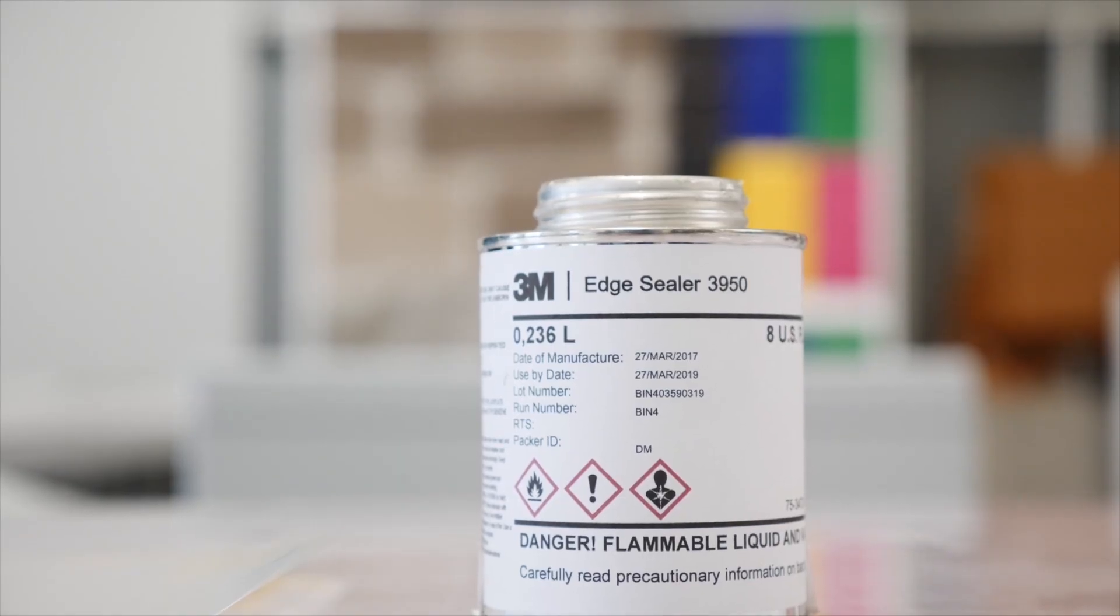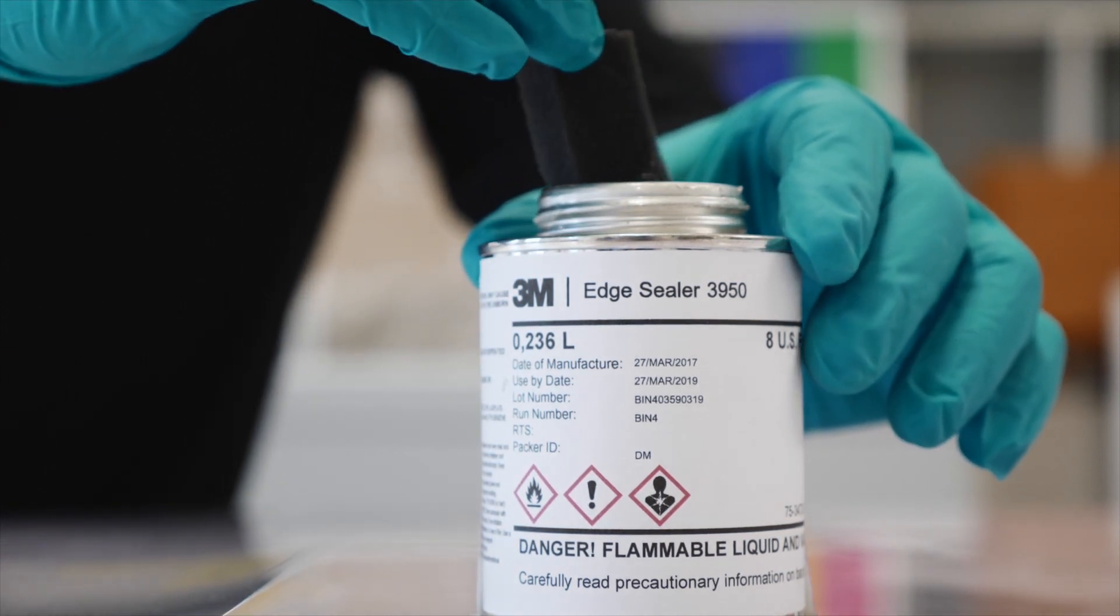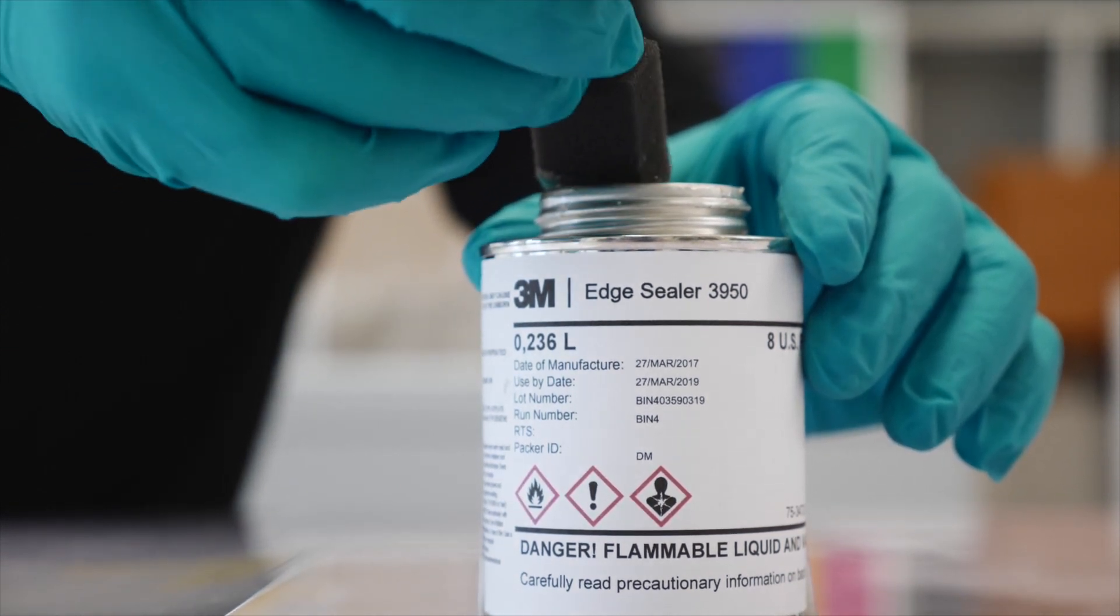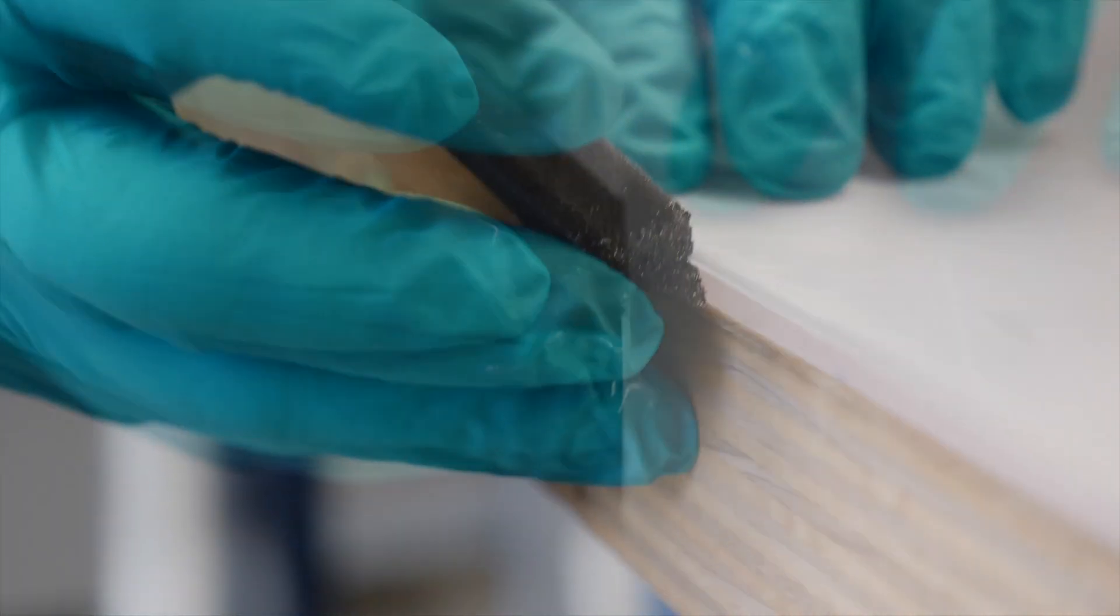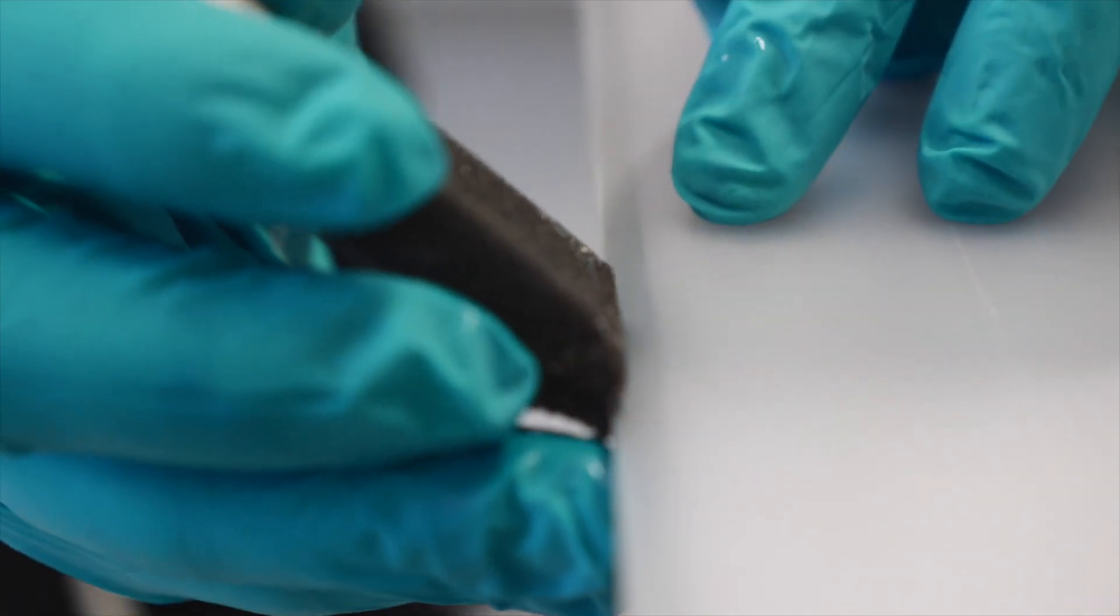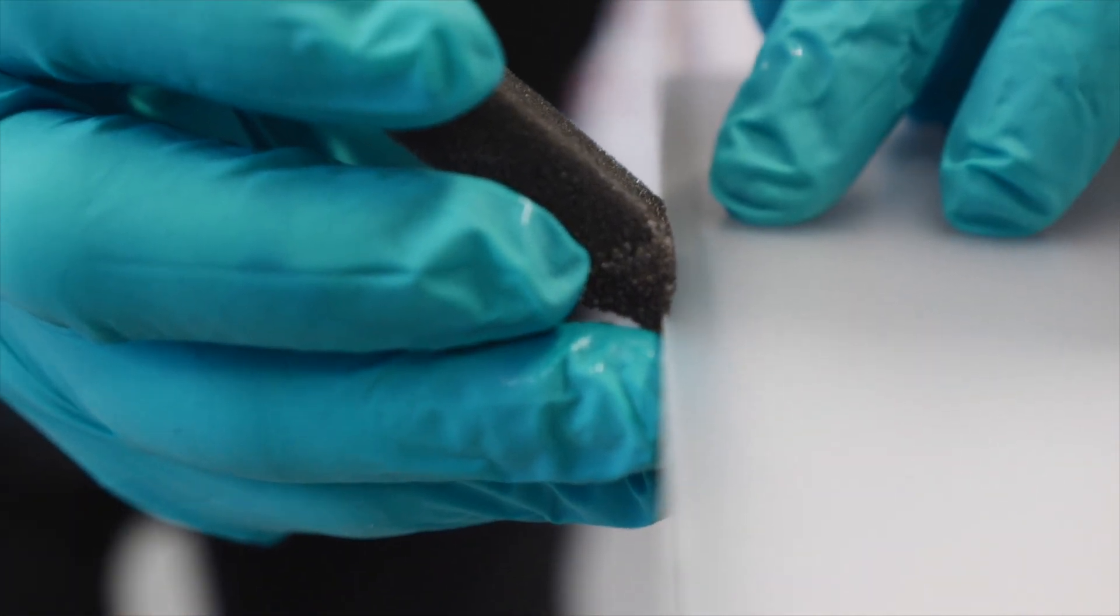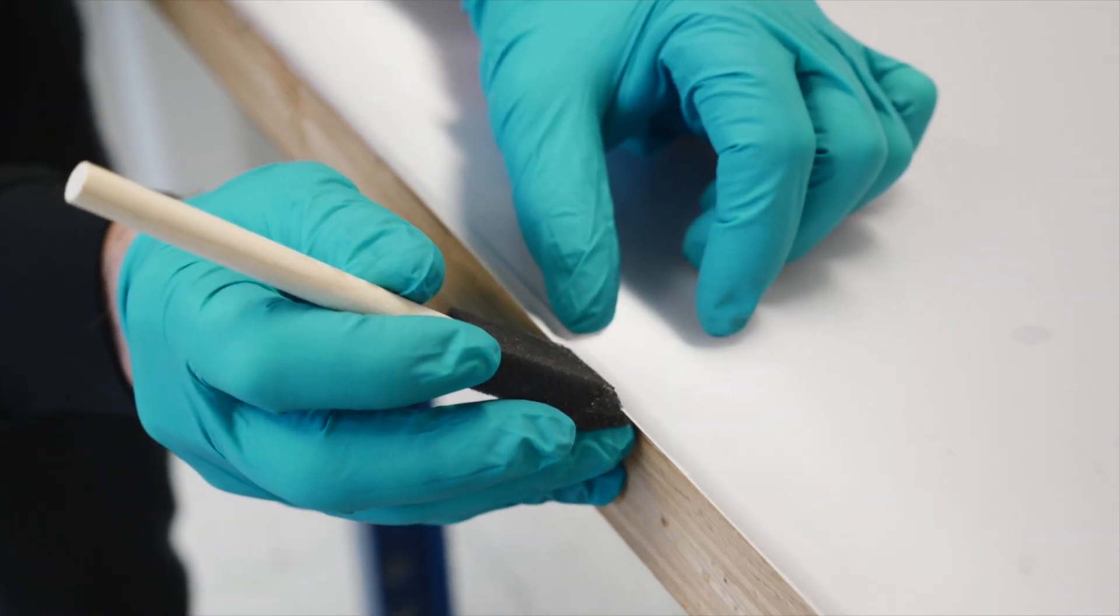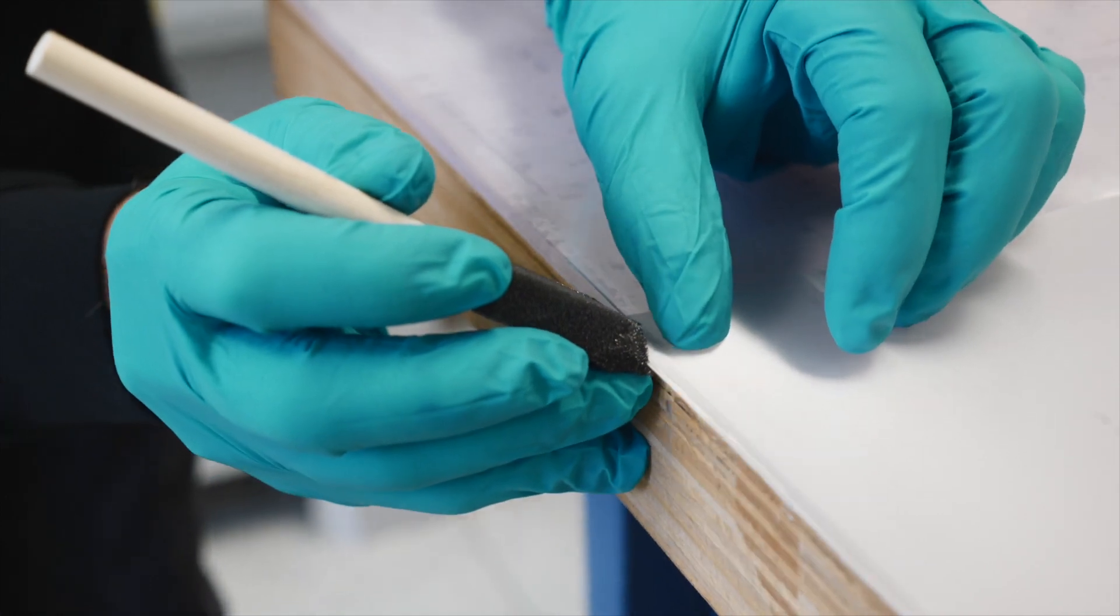It's now important to seal the edges so as to avoid an ingress of moisture during the installation, which might lead to permanent water marking. Carefully apply 3M Edge Sealer 3950 along the left and right vertical edges of the film. Minimize the amount of sealer on the film face by using a foam brush, leave to dry for 5 minutes. It's not necessary to seal the horizontal edges.